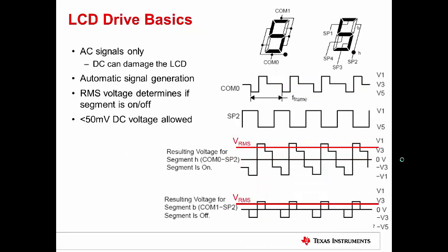LCDs must be driven with AC signals. A DC level on an LCD segment will damage the LCD. The MSP430 LCD module generates the AC waveforms automatically. The RMS voltage presented to an LCD segment is what determines whether it is on or off. The example waveforms above show resulting waveforms of both an on and an off segment. The on segment has a much larger RMS voltage than the off segment. Note that both segments have waveforms that have net zero DC voltage, but the RMS voltage to the on segment is higher, which causes it to turn on.